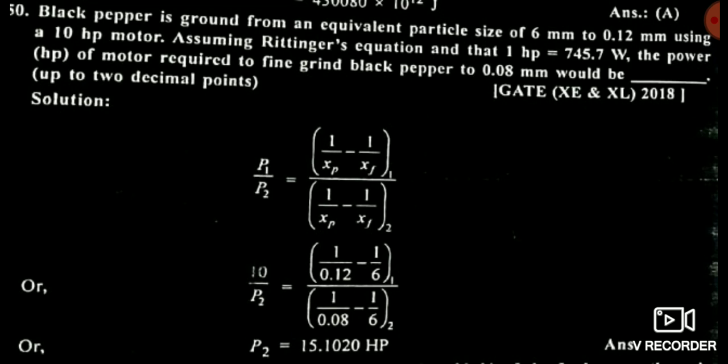See the next question — here also two cases based on Rittinger's law. Case 1: feed diameter 6 mm, product diameter 0.12 mm, power used is 10 HP. Case 2: feed is the same and the product diameter is 0.08 mm. Simply take the ratio of Case 1 and Case 2, and you get the answer: 15.102 HP.